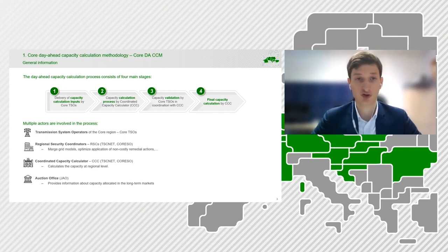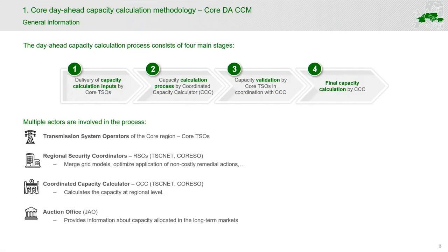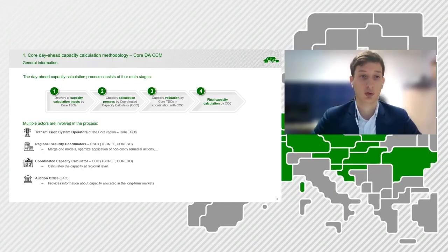This is quite a general description and we will get into details of every step later. There are multiple actors involved in the process. This is also very important to mention at this point. Firstly, it is the transmission system operators of the core capacity calculation region — in other words, the core TSOs — whose responsibility is to calculate and provide the calculations.